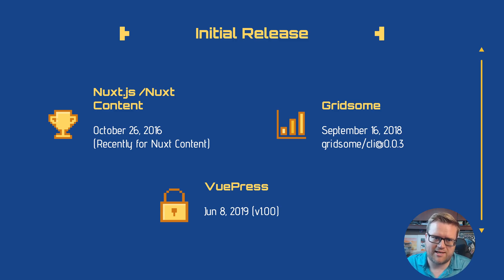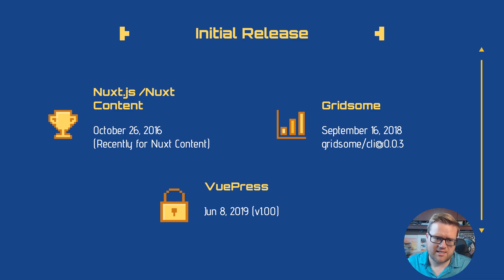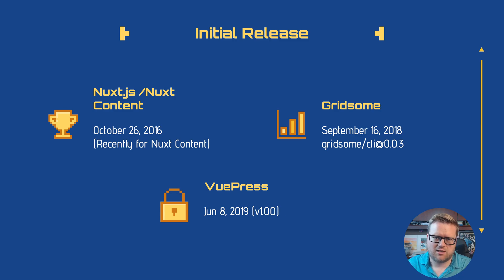The brand new one out of the block is Nuxt content. Nuxt itself came out October 26, 2016, so it's been around for quite a while. It was pretty much the biggest alternative to Vue and Vue CLI to create Vue applications. It started off more as a universal server-side rendered application builder, but it's really become a lot more since then. Nuxt content came out recently — just in the last few weeks as of this recording — and it's a way to create Nuxt apps using Markdown inside them.